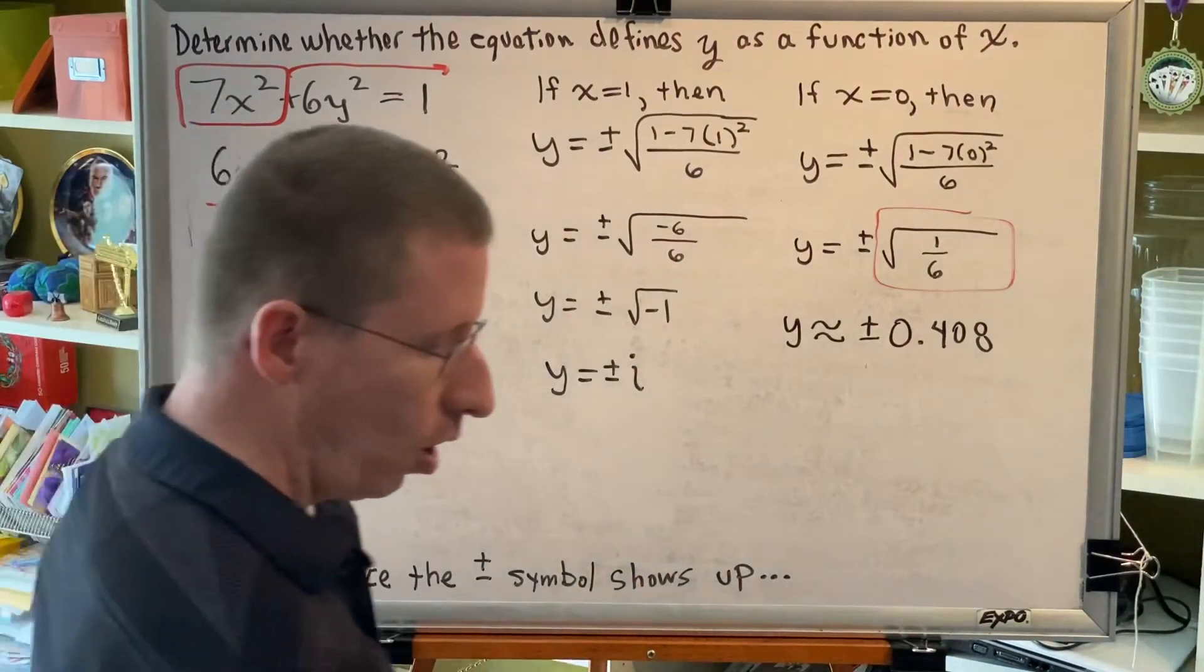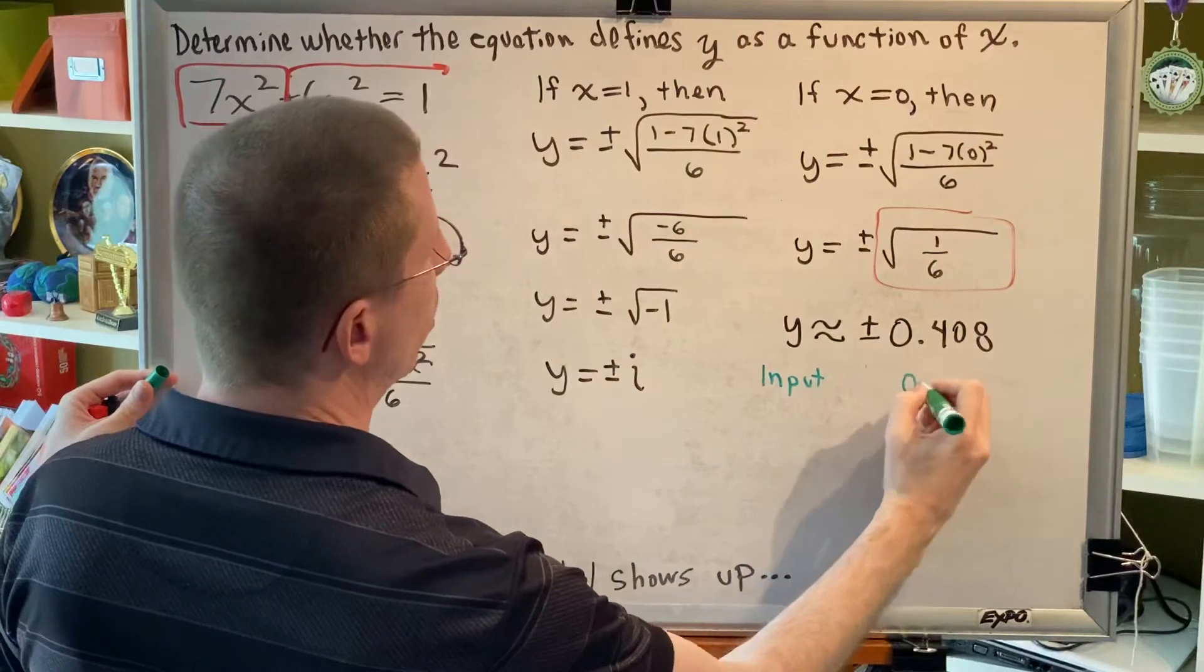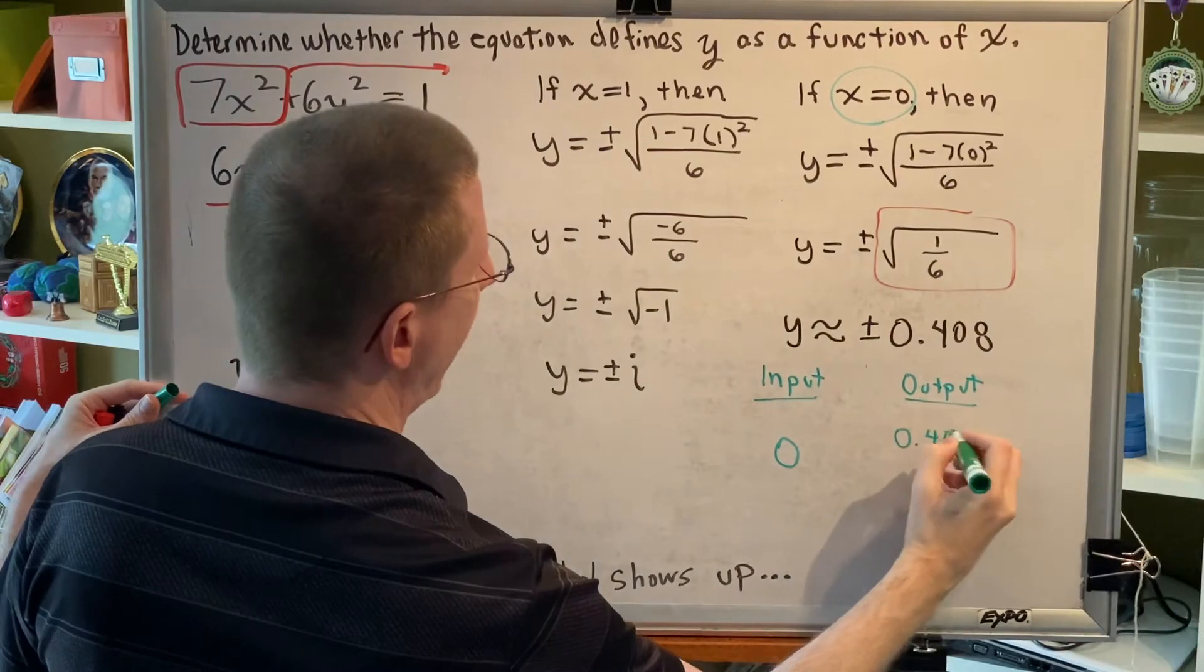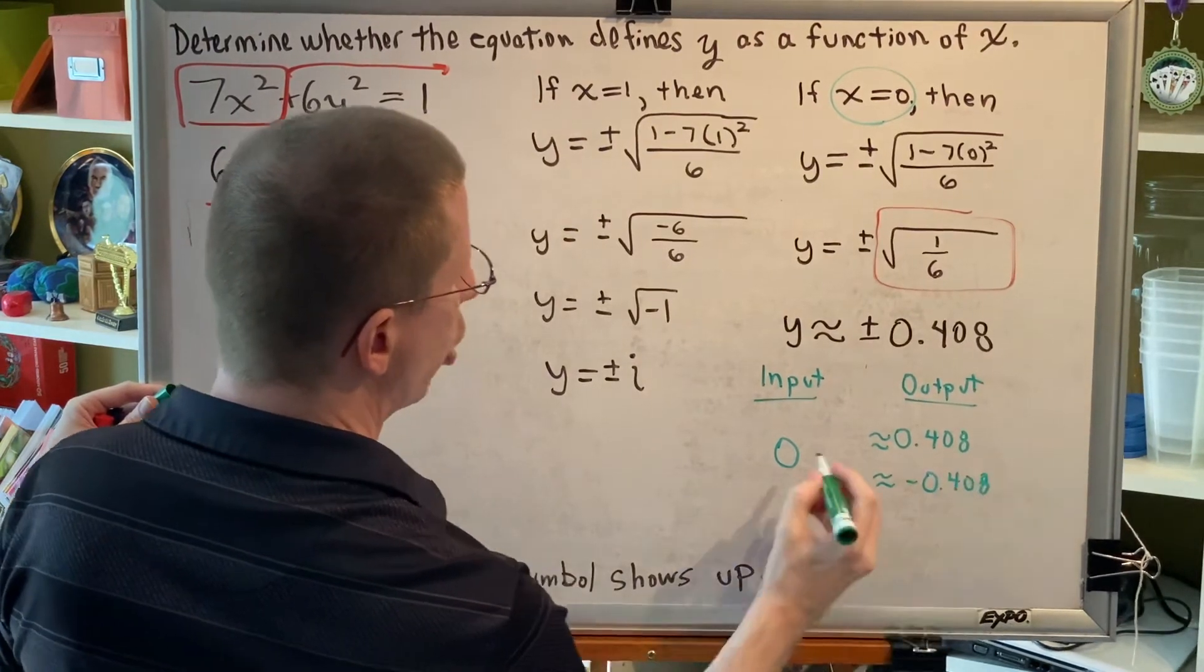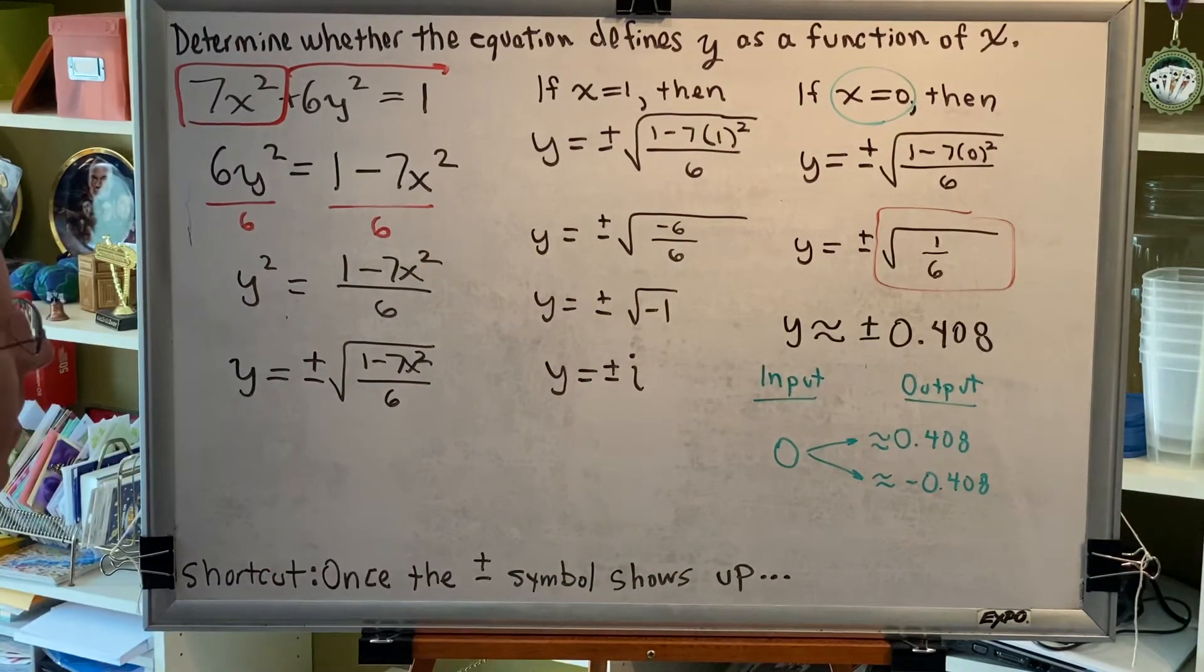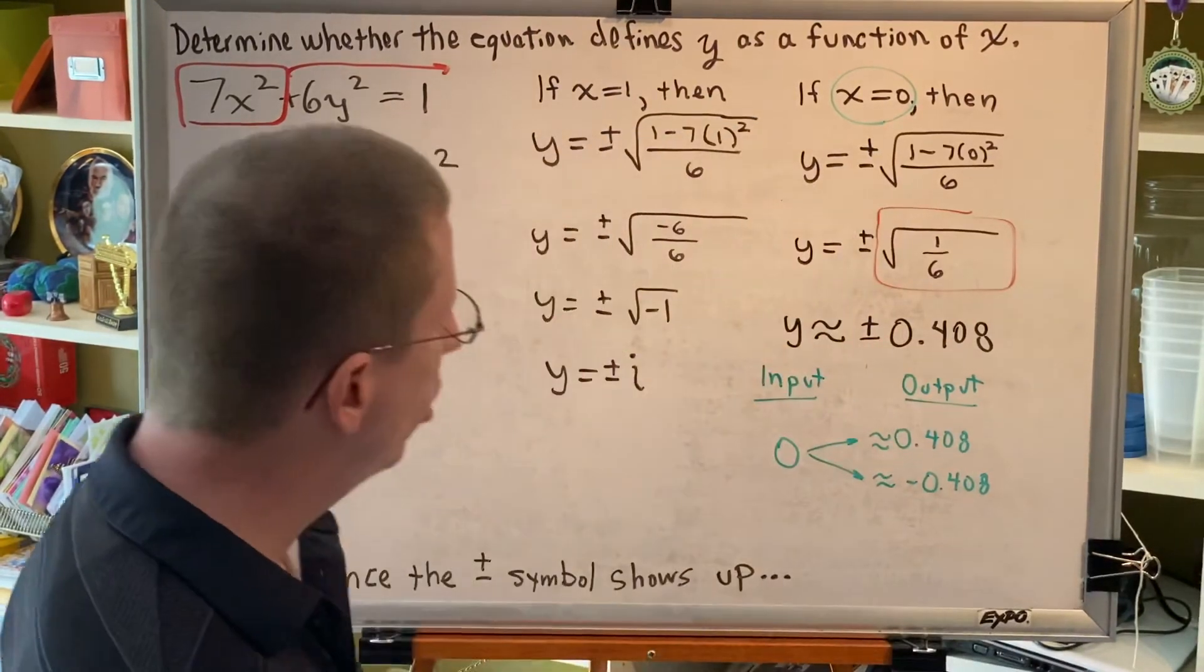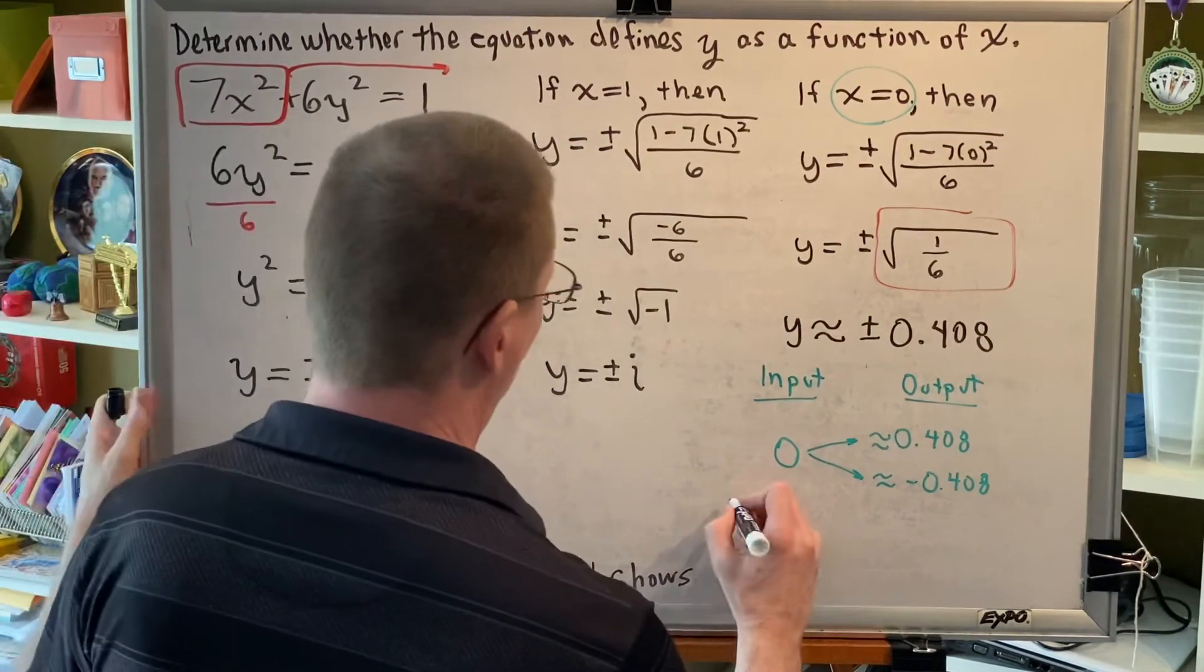I'd like to illustrate this concept by drawing just a super brief table here. So, in this equation, we found that when the input was 0, there were two outputs, 0.408 and -0.408. So, one input led us to two outputs. That is a direct violation of the definition of a function. For a relation to be a function, for each real input in the domain, there must be exactly one real output in the range. This is showing to not be the case. Therefore, this equation is not a function.